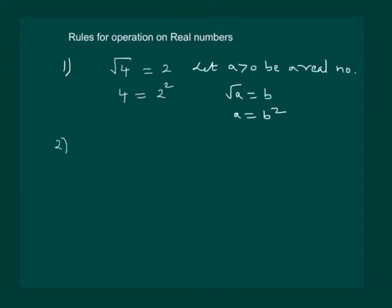According to the second rule, if a is greater than 0 and b is greater than 0, both real numbers, then under root of ab can be written as under root of a multiplied by under root of b.